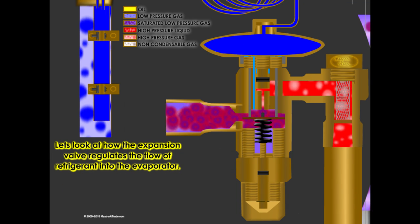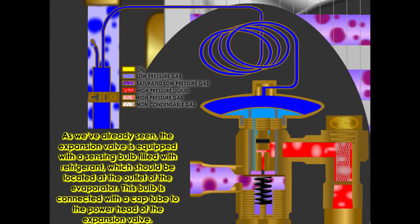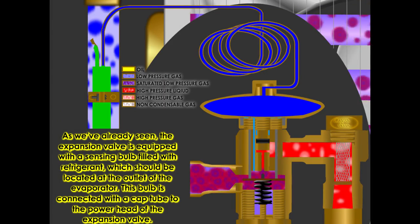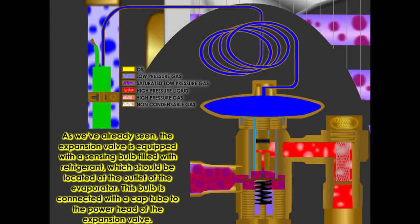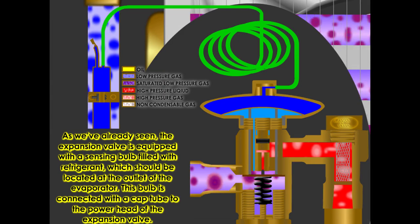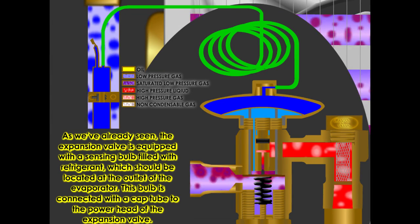Let's look at how the expansion valve regulates the flow of the refrigerant into the evaporator. As we've already seen, the expansion valve is equipped with a sensing bulb filled with refrigerant, which should be located at the outlet of the evaporator. This bulb is connected with a cap tube to the power head of the expansion valve.